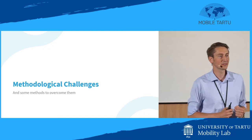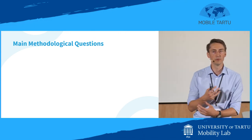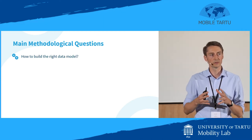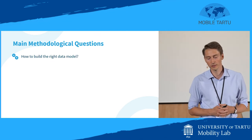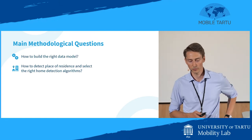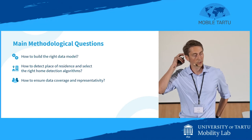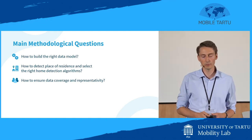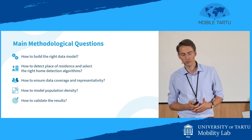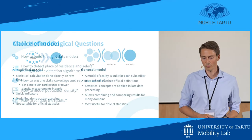There are methodological challenges. The guidance document also poses questions that should be answered. How do you build a data model that fits official definitions and can be used over time in a consistent way? How do you detect place of residence and select the right home detection algorithm — one of the most thoroughly researched issues? How do you ensure data coverage and representativity, overcoming selectivity biases, especially when using a sample? And how do you model population density when dealing with cell site level information? And ultimately, how do you validate these results against official data?